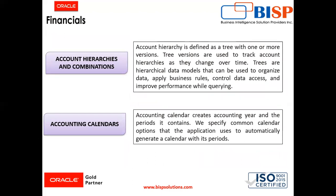Moving further comes the account hierarchies and combinations. An account hierarchy is defined as a tree with one or more versions. Tree versions are used to track account hierarchies as they change over time. Trees are hierarchical data models that can be used to organize data, apply business rules, control data access, and improve performance while querying. Account hierarchies are used to create a parent-child relationship within the chart of account values. These values can be associated with multiple hierarchies by defining multiple trees. For example, we can use different hierarchies to track cost centers either by geography or by line of business.